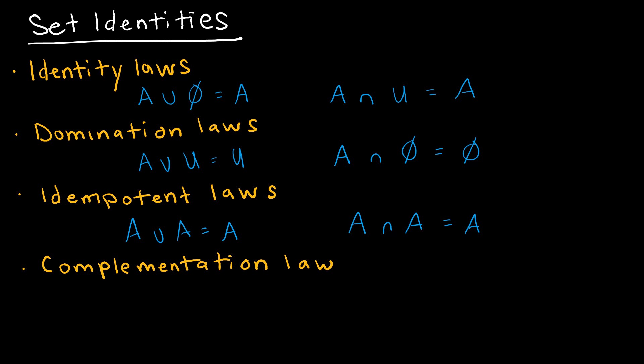The complementation law: the complement of not A gives us back A, because if I took A, took the complement, and then took the complement of that, I end up back where I started. It's kind of like adding five to a value and then subtracting five — you end up back where you started.